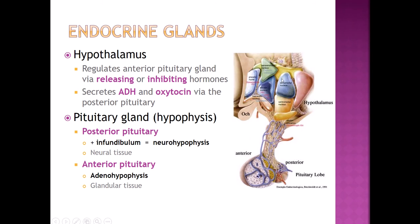We'll start with the hypothalamus and the hypophysis, or pituitary gland, because these are two of the most important endocrine glands — in part because they help regulate other endocrine glands. The hypothalamus regulates the pituitary gland by releasing what we call releasing or inhibiting hormones, and it also creates ADH and oxytocin, which actually get released by the posterior pituitary. The pituitary gland sits on a little stalk called the infundibulum. The posterior pituitary connects to the hypothalamus via the infundibulum and is actually neural tissue — the neurohypophysis, essentially an extension of the hypothalamus. The anterior pituitary, or adenohypophysis, is actual glandular tissue, and they look very different microscopically.